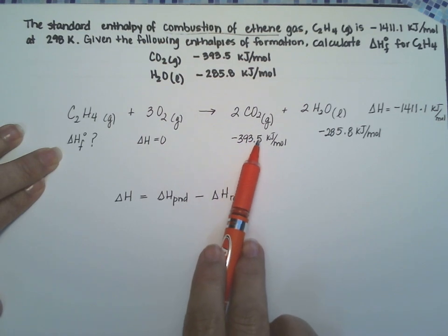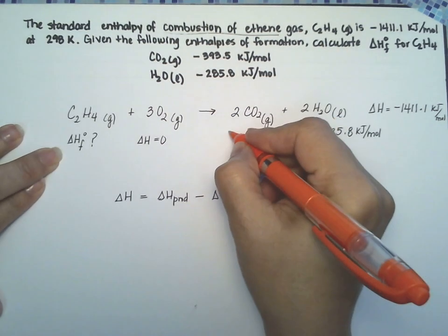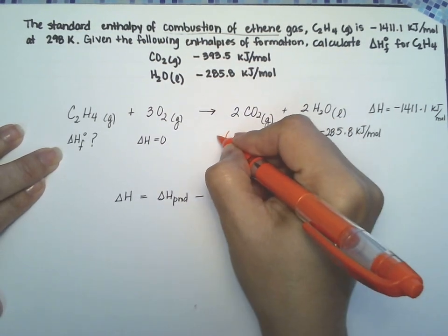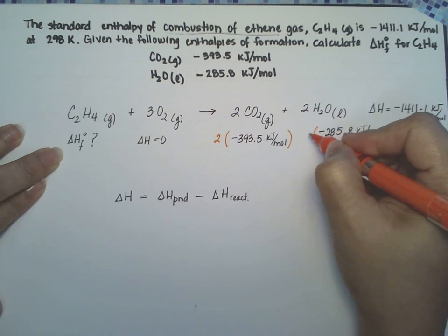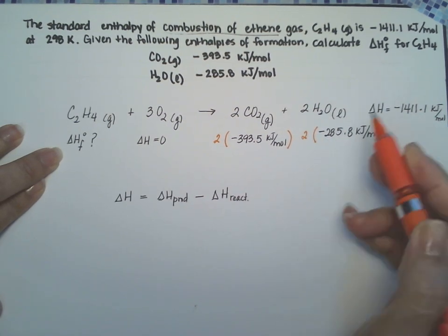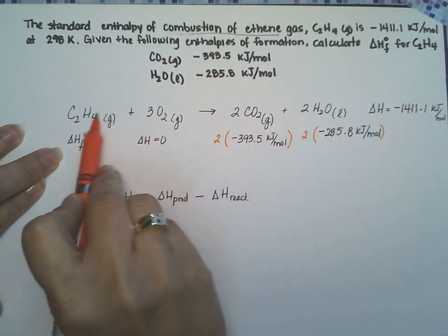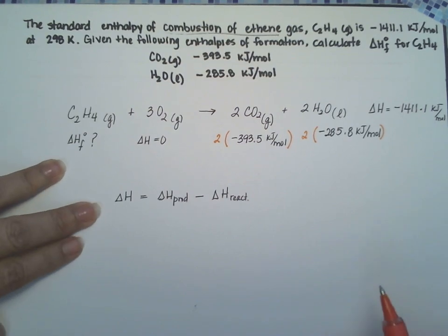This is 393.5 per mole but we have two moles so we're going to have to multiply that by two, and the same thing with water. The number they give us is for one mole but we're forming two moles for this reaction, and that's the reaction we're going to have to use.